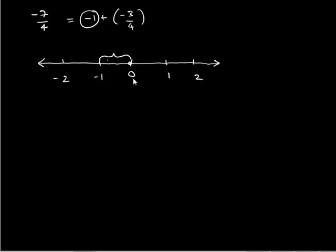Now, divide the unit length between minus 1 and minus 2 into 4 equal parts because the denominator we have is 4. So, let us divide it: 1, 2, 3, so we have 1, 2, 3 and 4 parts.